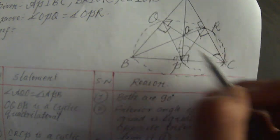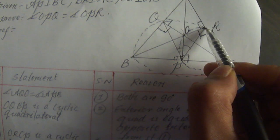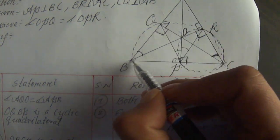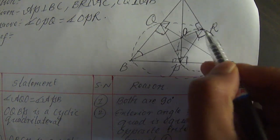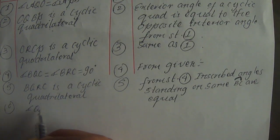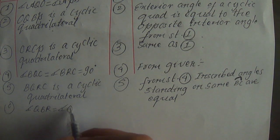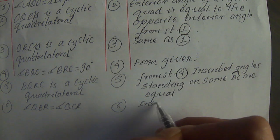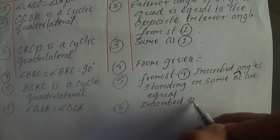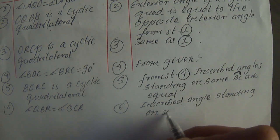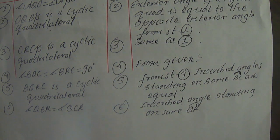Angle QCR is equal to angle QBR because they are standing on the same arc QR. First we show that angle QBR equals angle QCR — both standing on arc QR. QBR is standing on arc QR, QCR is also standing on arc QR. So in statement number 6: angle QBR is equal to angle QCR. Reason: inscribed angle standing on the same arc QR.